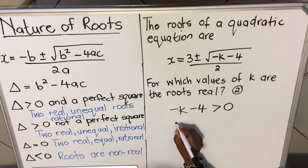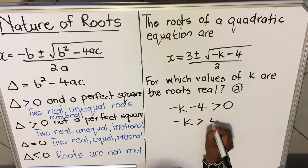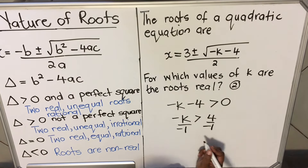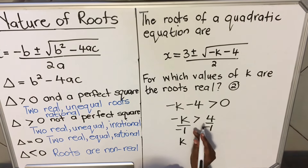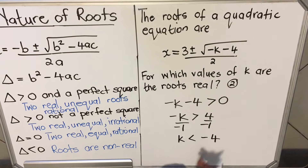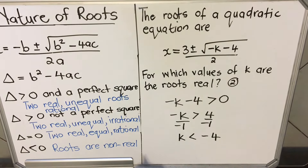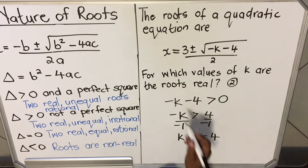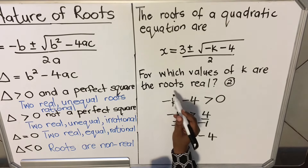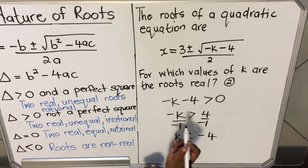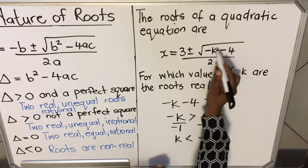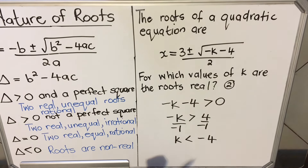Solving −k − 4 > 0: move −4 to the other side to get −k > 4, then divide both sides by −1. Remember, when you divide an inequality by a negative number you reverse the inequality sign, giving k < −4. The key is to identify where your delta (b² − 4ac) is in the given expression and apply the correct inequality condition based on what the question asks.